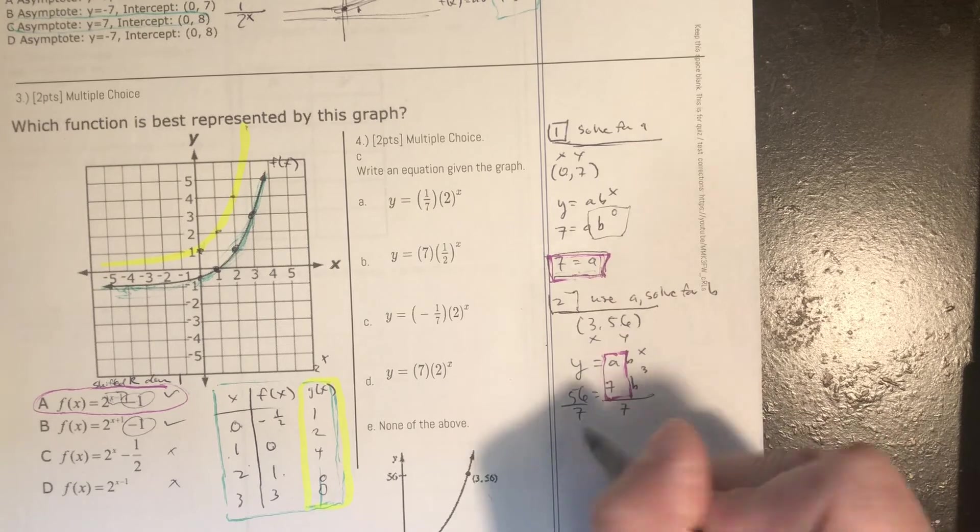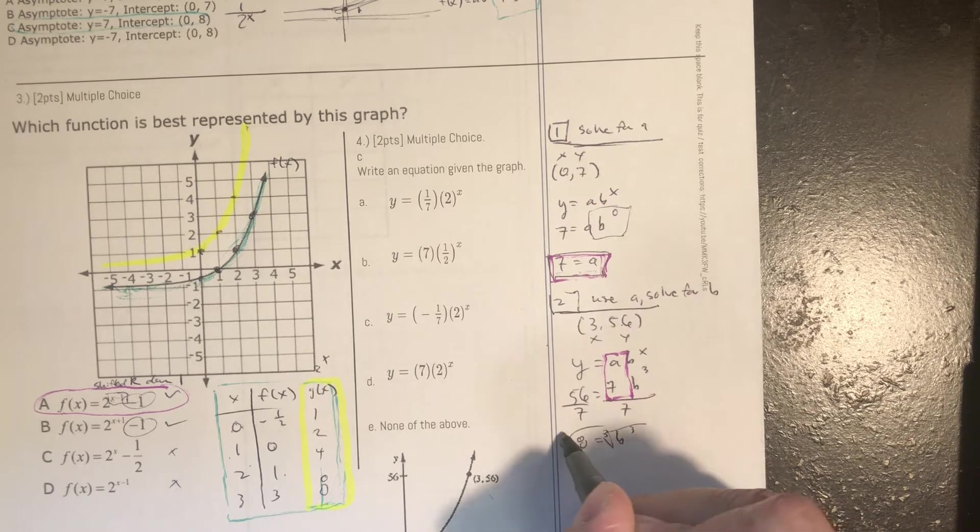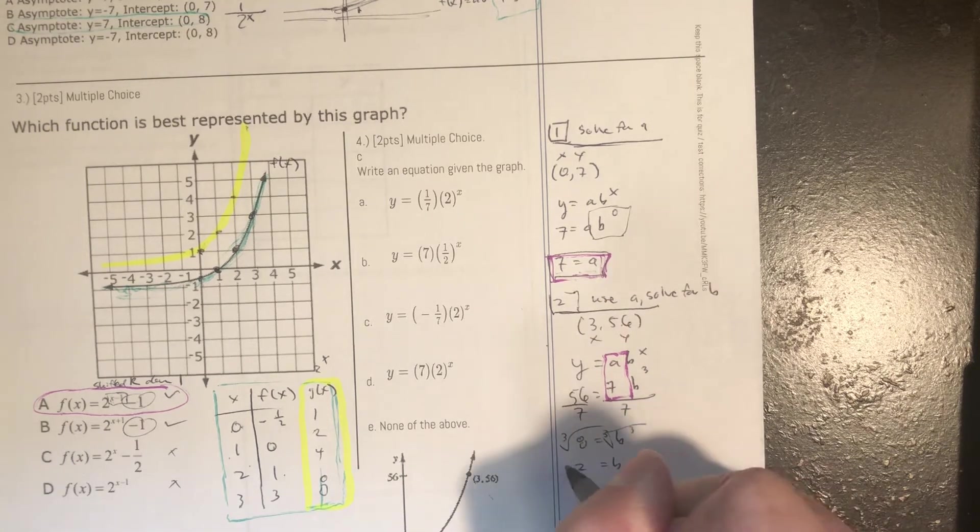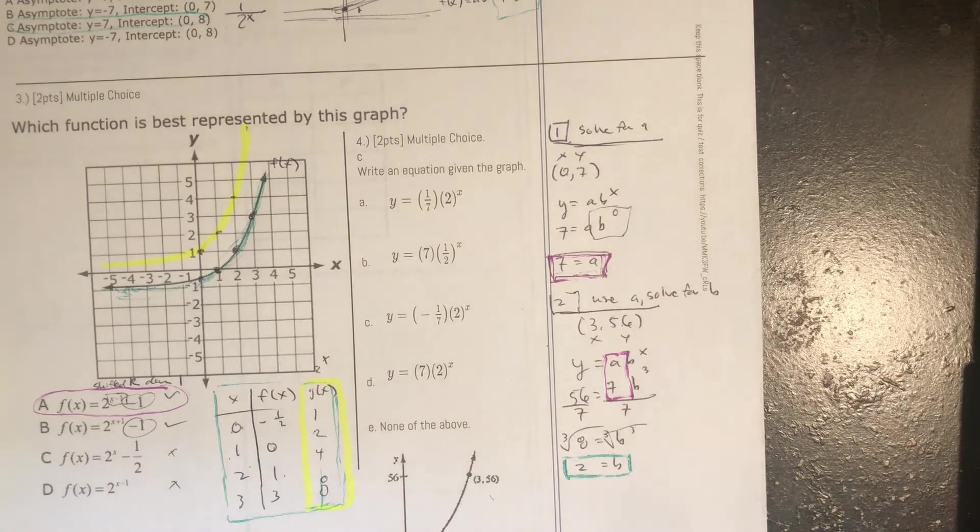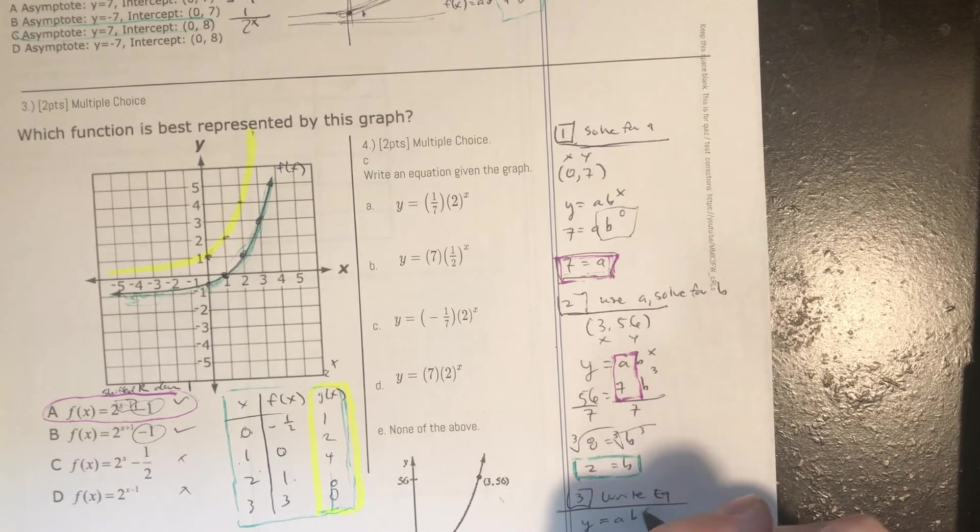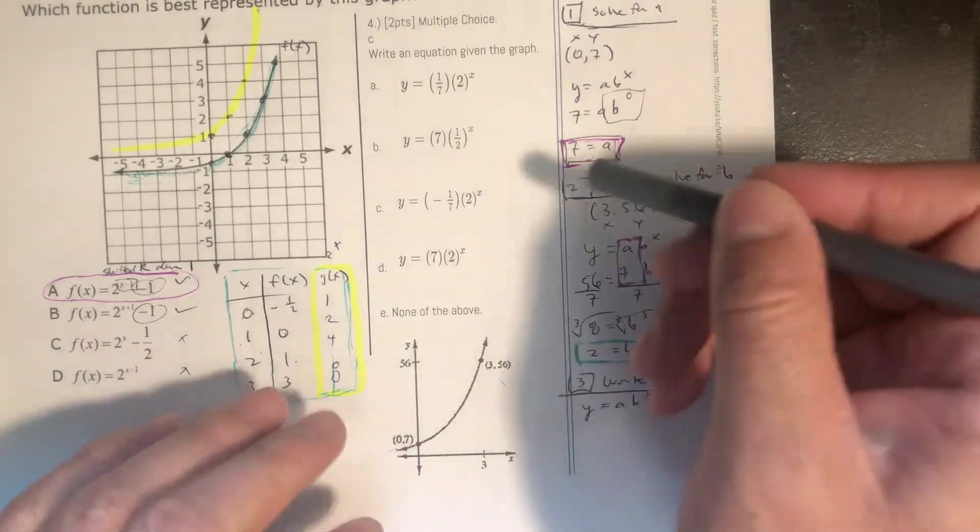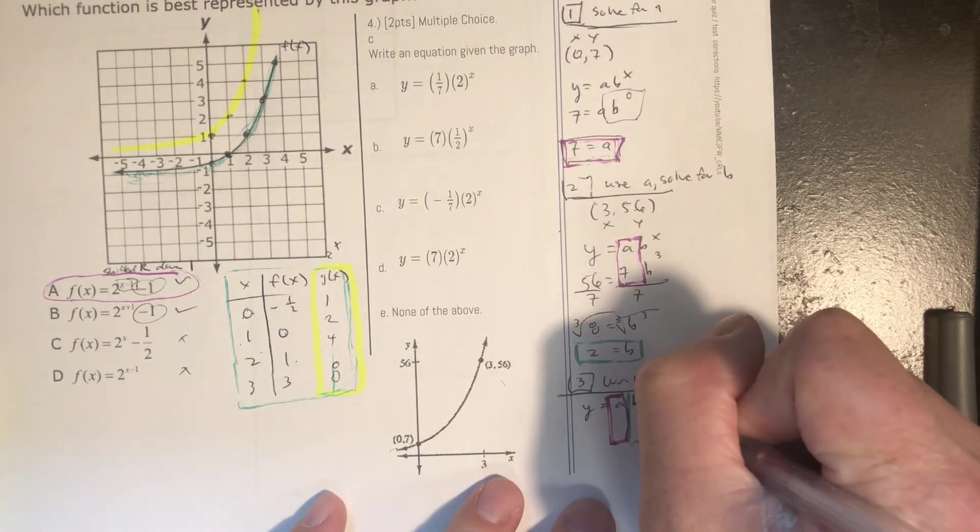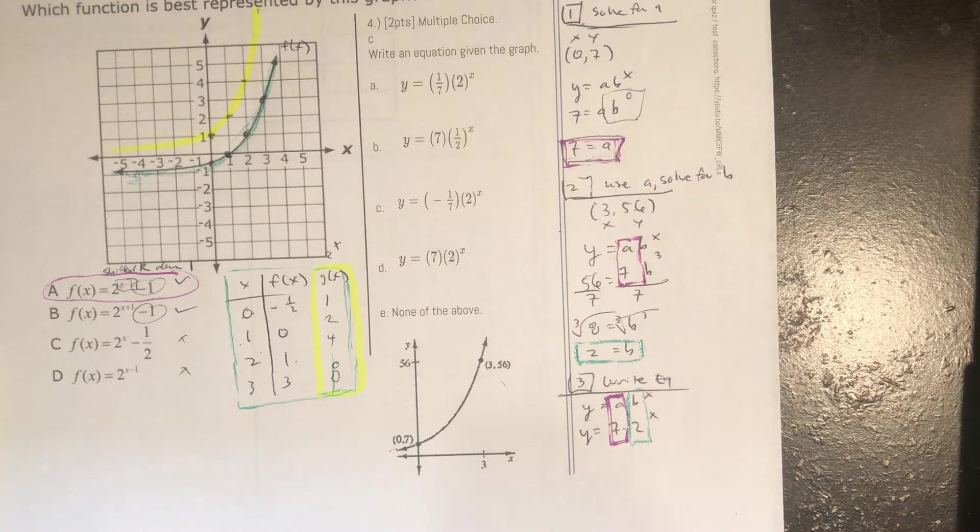Let's write that, solve for b. So I'm going to divide by 7. That gives me 8 equals b to the third power. To get rid of the power of 3 I'm going to take a radical or the cube root of 8. Three identical numbers that equal 8 is 2. So now I have b equals 2. And the third thing I can do is write an equation. y equals a times b to the x. So I have an a value that's 7. And the b value is 2. y equals 7 times 2 to the x power and that would be choice d.